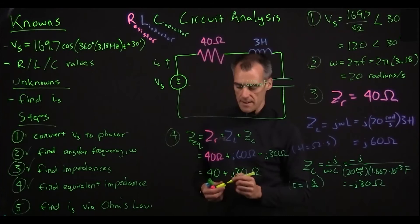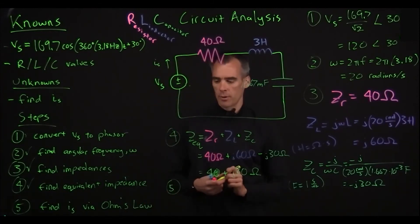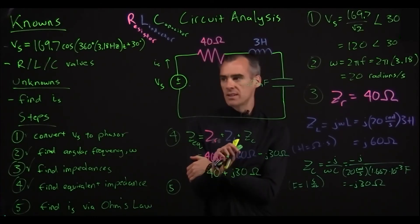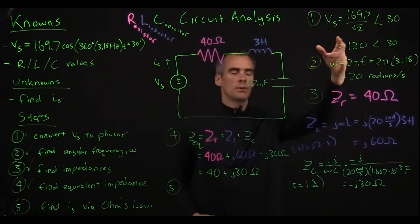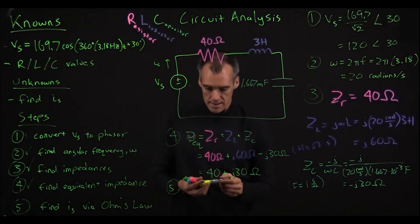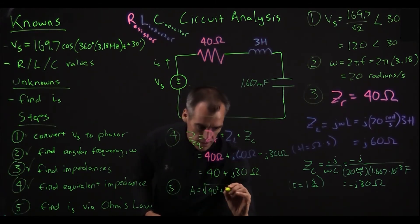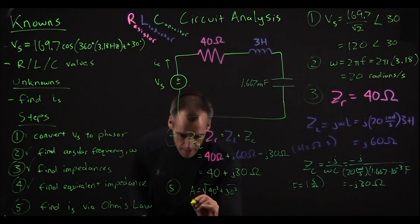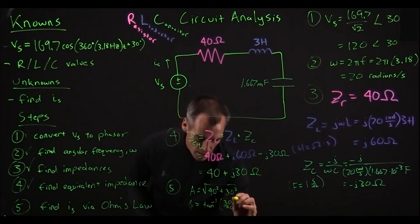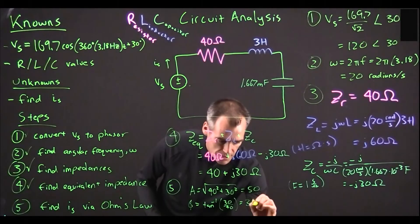And finally, step 5, we're going to want to find IS via Ohm's Law. But first, before we find it, we're going to want to actually convert this into a phasor form, because our voltage is in phasor form, and to use Ohm's Law, you want them in the same form, because we're going to be doing some division. So let's convert that. In this case, our A value is going to be the square root of 40 squared plus 30 squared, and our phi value is going to be the inverse tangent of our imaginary over our real, 30 over 40, and it turns out this is going to equal 50, and this is going to equal 36.9 degrees.